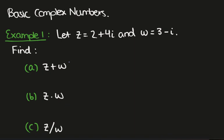In this video we're going to look at basic complex number calculations. Beginning with this first example, let z equal 2 plus 4i, where i is the square root of minus 1. And we'll let w equal 3 minus i.